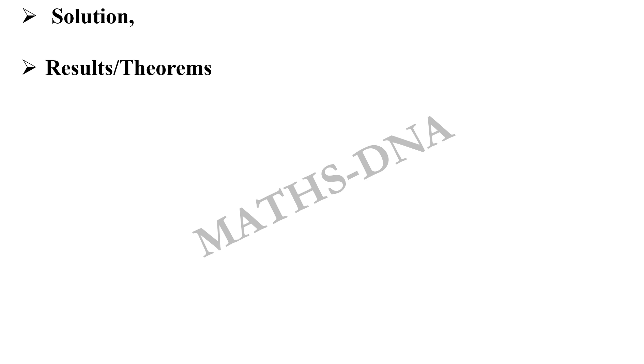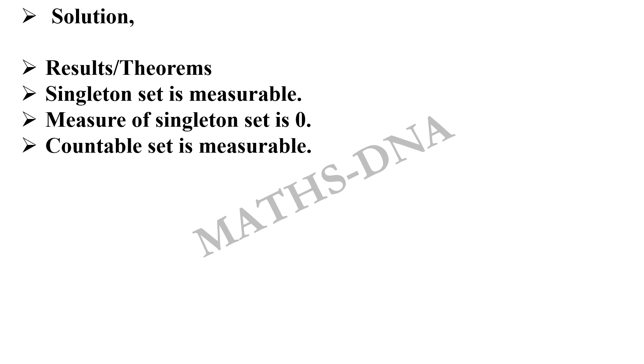Now the results and theorems we will be using for this question are: first, singleton set is measurable; secondly, the measure of singleton set is 0; third, the countable set is measurable; and fourth, measure of countable set is 0. So all the four statements were just as it is.